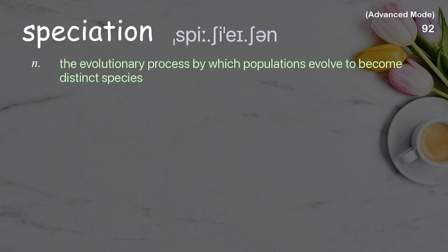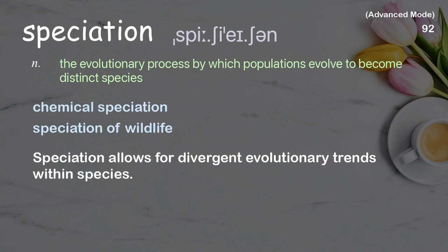Speciation: the evolutionary process by which populations evolve to become distinct species. Examples: chemical speciation, speciation of wildlife. Speciation allows for divergent evolutionary trends within species.